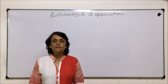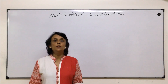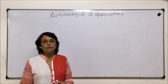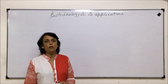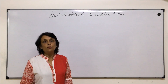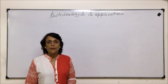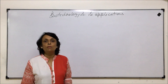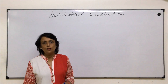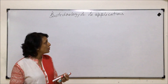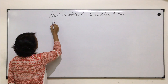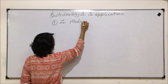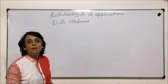In this video we are starting with the second chapter of our unit of biotechnology — Biotechnology and Its Applications. In the first chapter we studied all the basic things about biotechnological processes, and now we are on the applications. We can classify these applications into various categories like agriculture, medicine, and other purposes. We will start with applications in medicine.